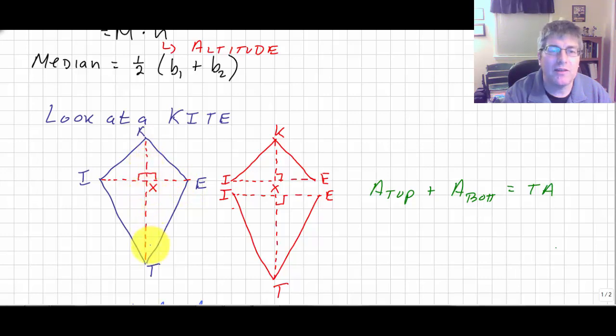So since the diagonals are perpendicular, we can look at our kite and we could divide it into a triangle on the top and a triangle on the bottom, with KX and TX being altitudes of those two kites.